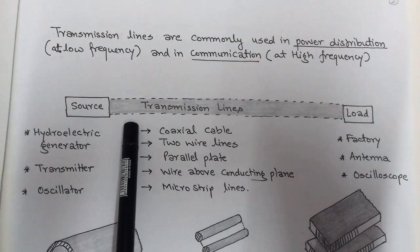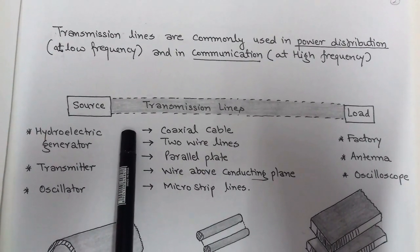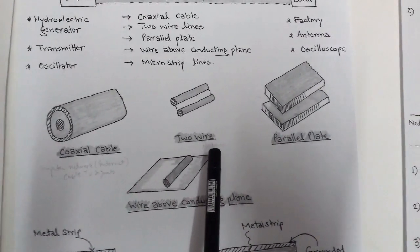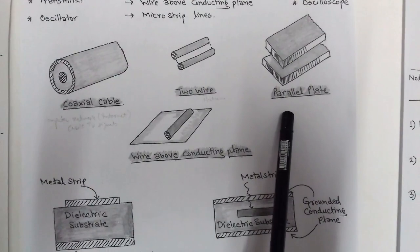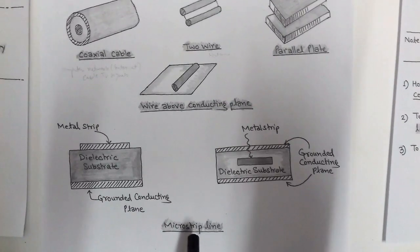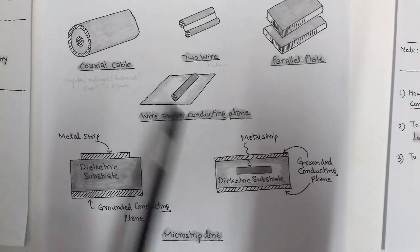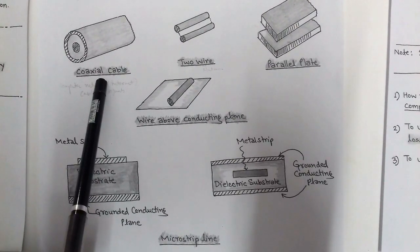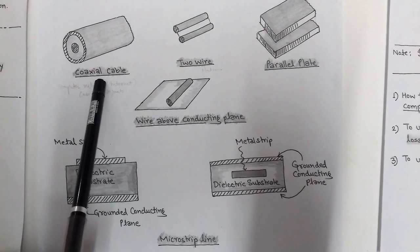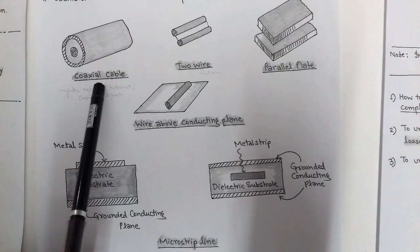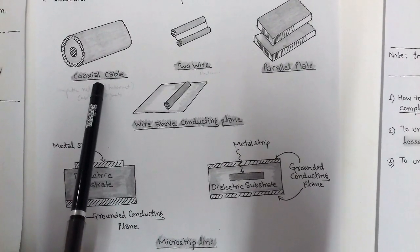The types of transmission lines are as follows: first is coaxial cable, second is two-wire lines, third is parallel plate, fourth is wire above conducting plane, and fifth is microstrip lines. Among all five, the most commonly used is coaxial cable, which is used in cable TV signals and also in computer networks, that is, the internet.